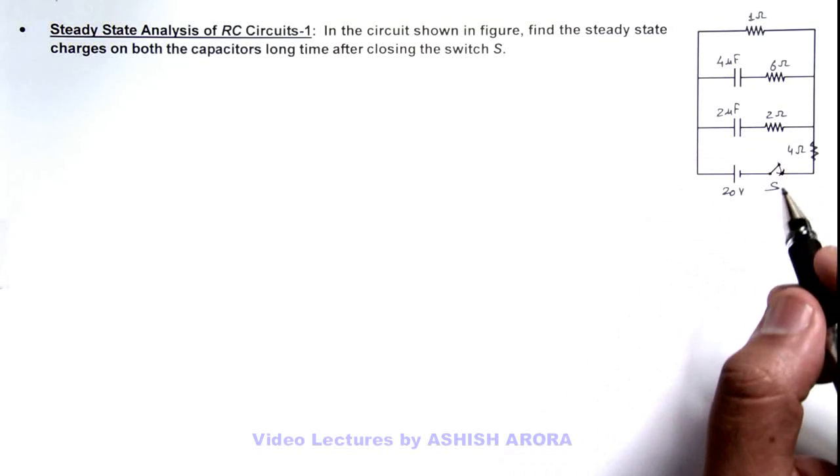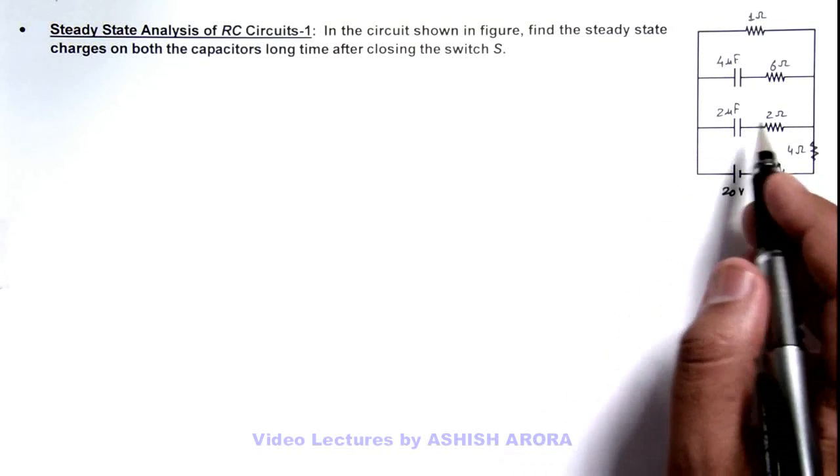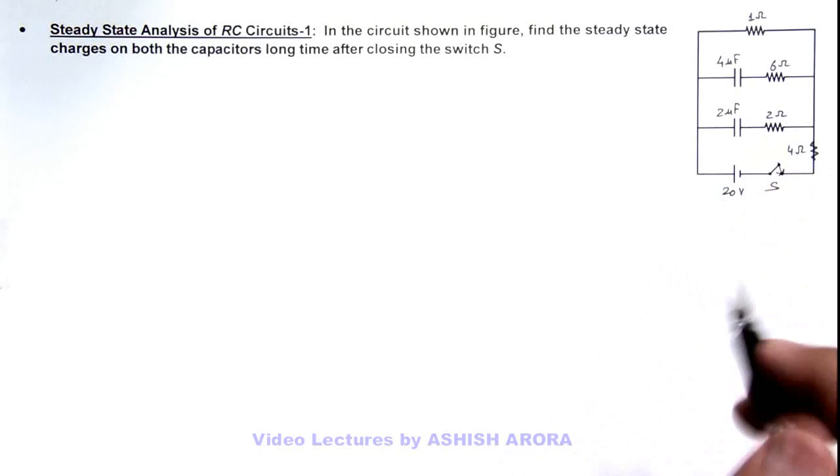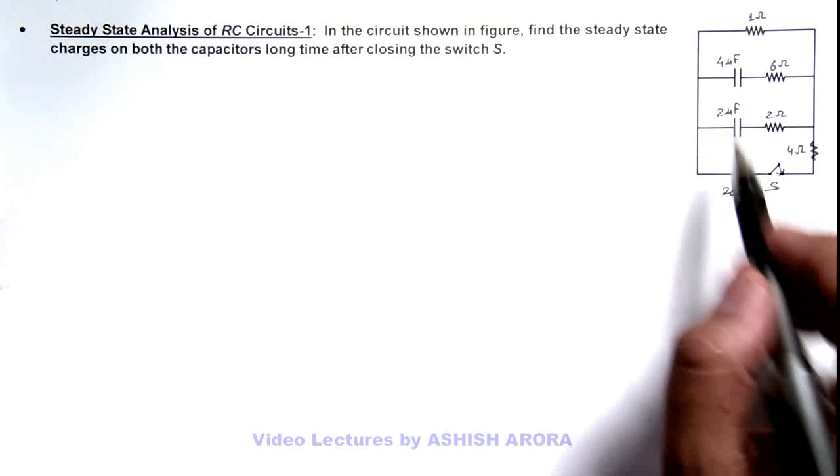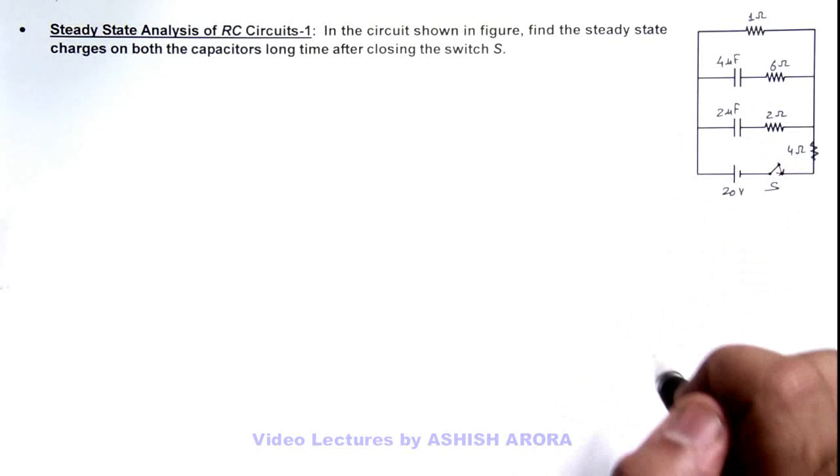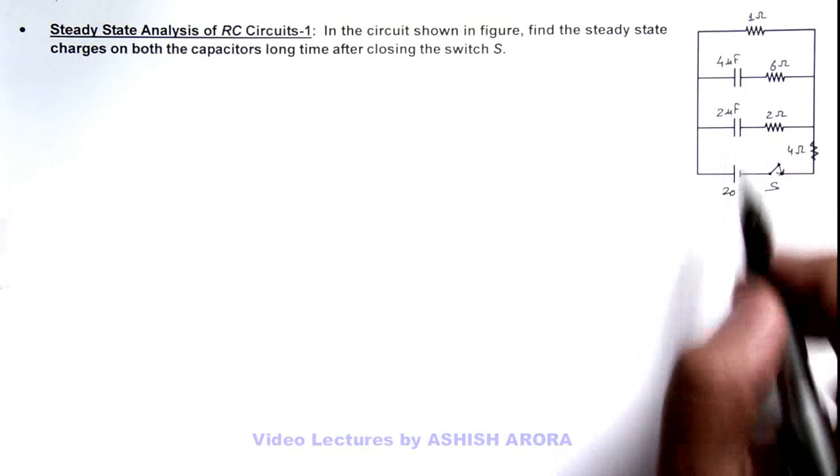Transient phenomena will take place and gradually charges on capacitor will increase and finally in steady state they'll reach a constant value. And we know well that in steady state, the current through capacitor branches become zero because capacitors are fully charged.